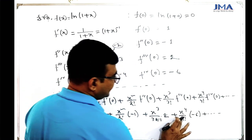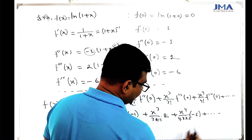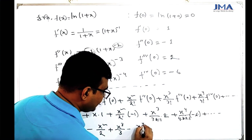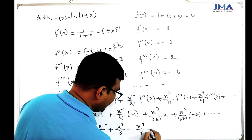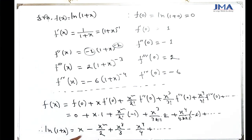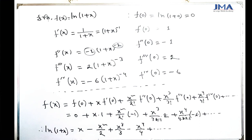Adding x to the power 4 by 4 factorial times (minus 6). Since 4 factorial equals 24, and 24 divided by 6 equals 4, we get: x minus x squared by 2 plus x cubed by 3 minus x to the power 4 by 4 plus dot dot dot. This is the Maclaurin series for ln(1 + x).